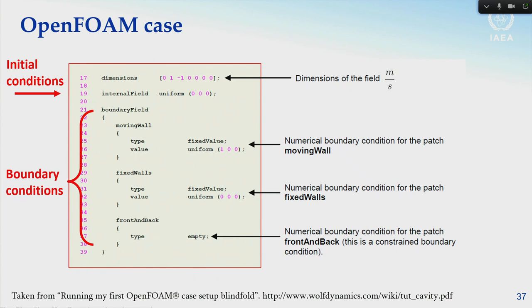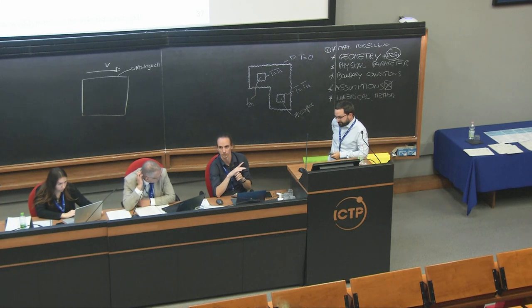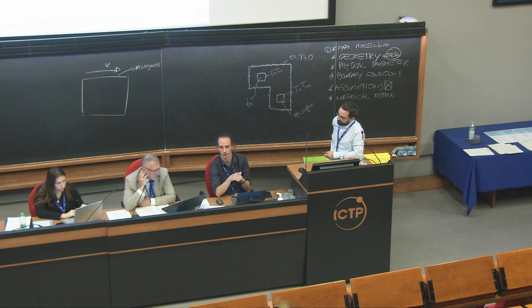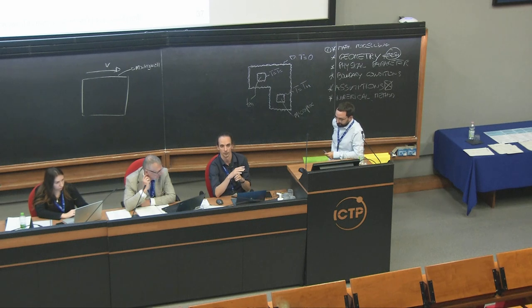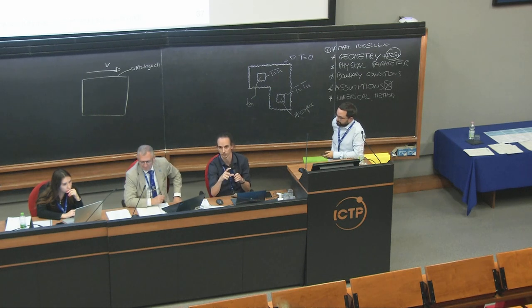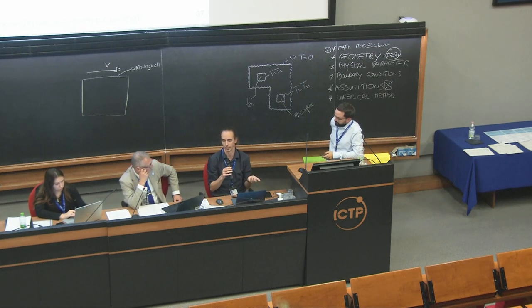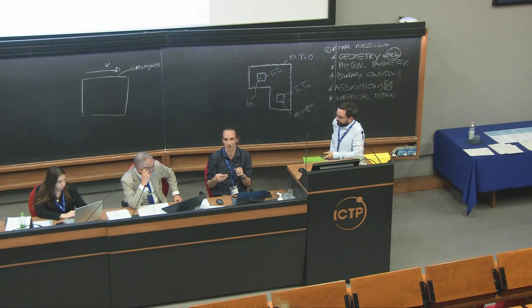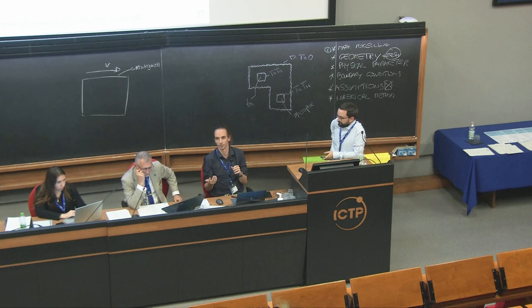The 'banana method' works for any keyword in OpenFOAM, not just boundary conditions. For example, when choosing a linear solver, type any invalid word and OpenFOAM will tell you the matrix type (symmetric or asymmetric) and list applicable solvers. This is one reason why OpenFOAM documentation was not always comprehensive — people relied on this method instead.